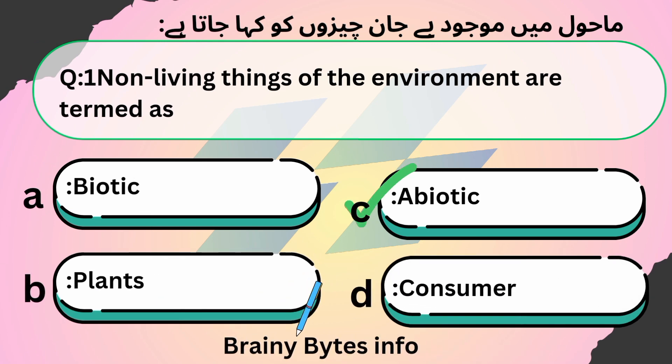Non-living things of the environment are termed as — option C — abiotic.